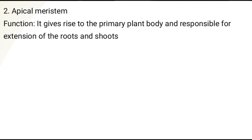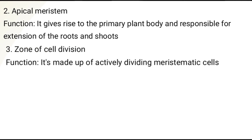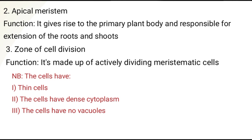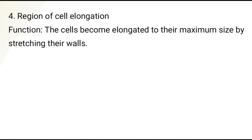Number three, we have the zone of cell division. It is made up of actively dividing meristematic cells. The cells have thin walls, dense cytoplasm, and no vacuoles. Number four, zone of cell elongation — the cells become elongated to their maximum size by stretching their walls.